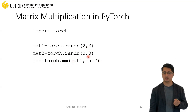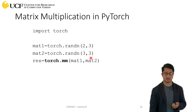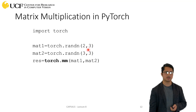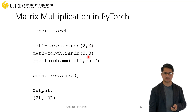You need compatibility between the two matrices. The number of columns in the first matrix must equal the number of rows in the second matrix — which is three in both cases here. The resultant matrix will be of shape 2×3.